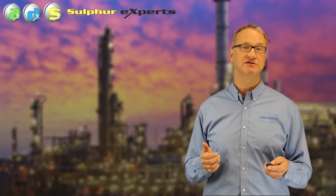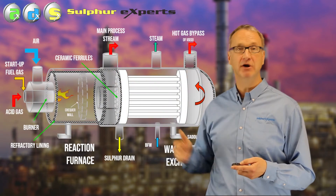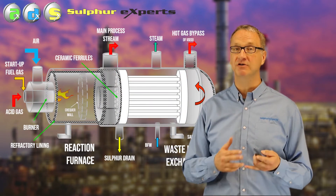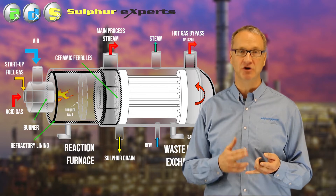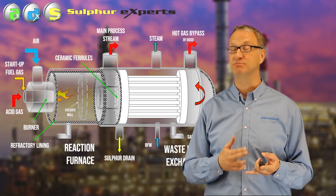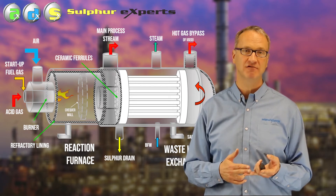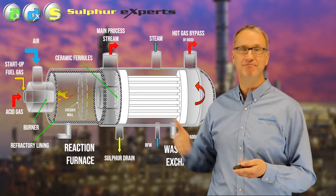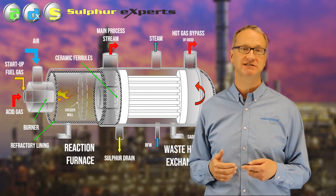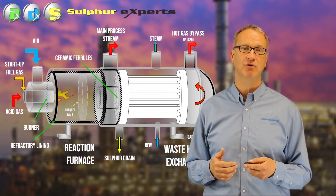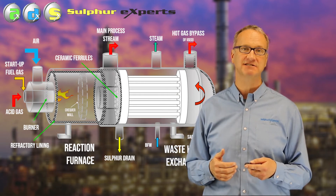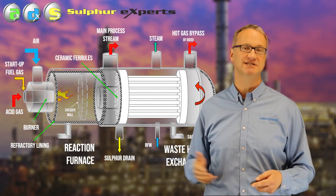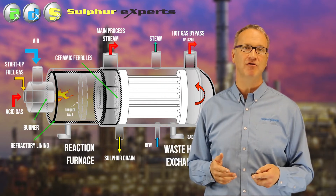The first thing we need to do is have a good burner. There are lots of good burners specifically designed for sulfur plants. You need good mixing in a sulfur plant, especially when you have sour water stripper gas, and you need a burner on the front end of the furnace that's designed for that stream.